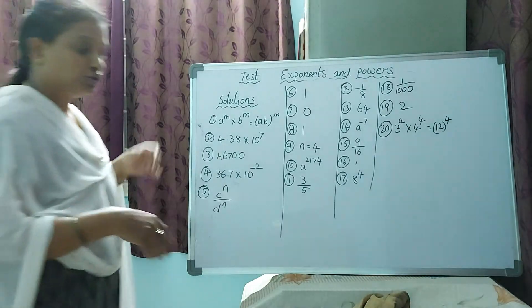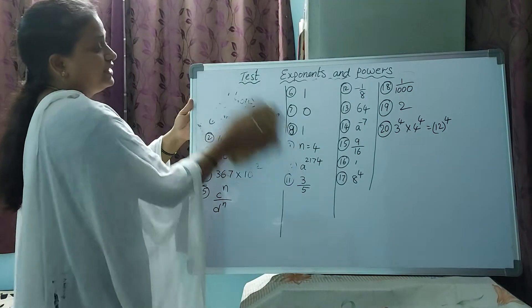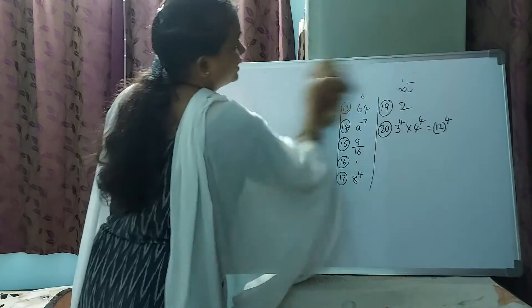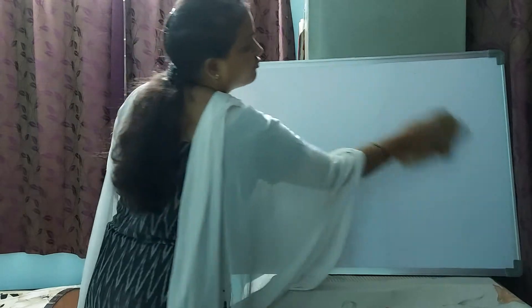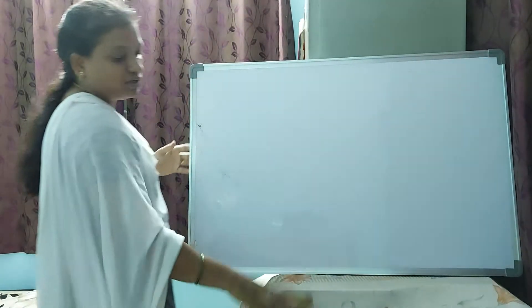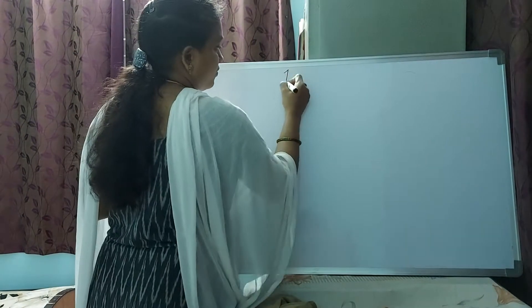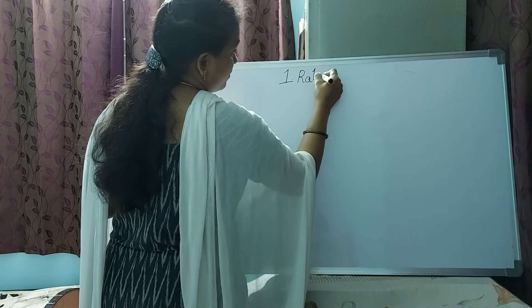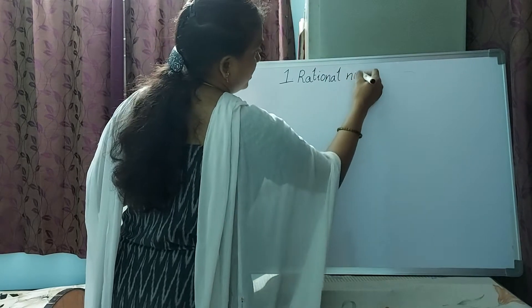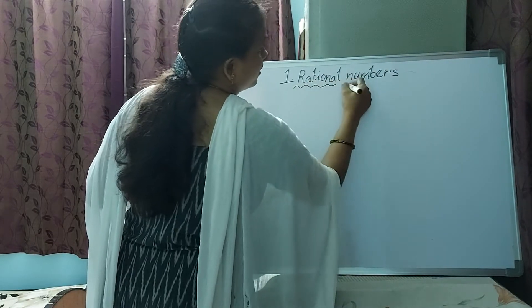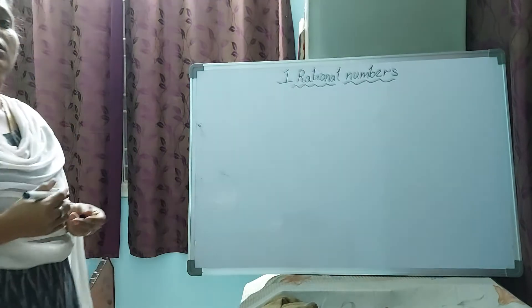Today we will see the new chapter: Rational Numbers. This is the first chapter for Class 8 students. Note: not even one person kept the answers/solutions in the group — you are just watching videos and leaving. Before going into rational numbers, let's have a look at this introduction.